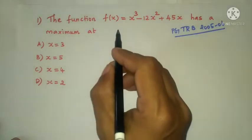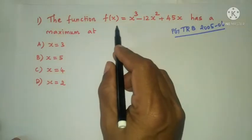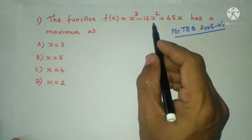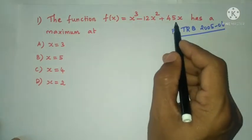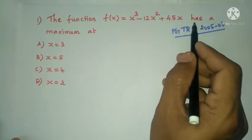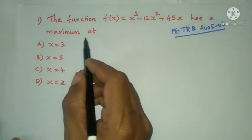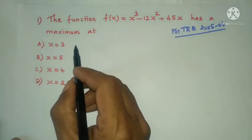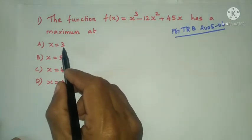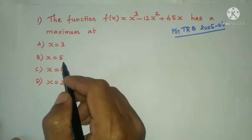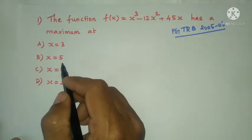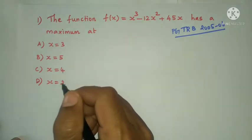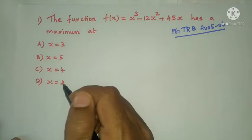First question: the function f of x is equal to x³ minus 12x² plus 45x has a maximum at — options are x equals 3, x equals 5, x equals 4, or x equals 2.